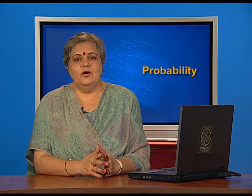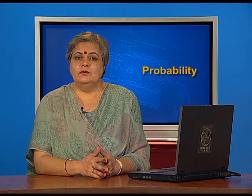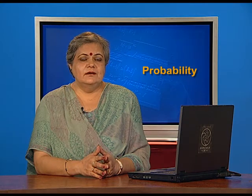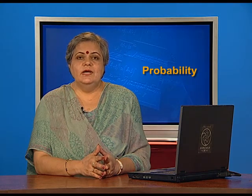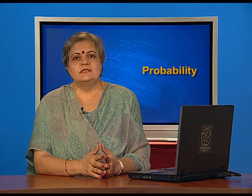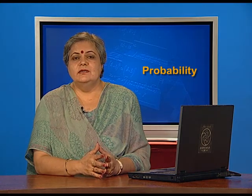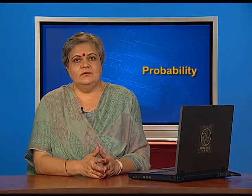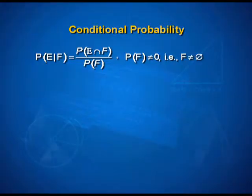What is the probability of event E happening, knowing that event F has occurred? We also looked at a relation which can be used as a formula. The result that we discussed and derived was that the probability of E given that F has occurred is the same as the probability of E intersection F divided by probability of F, where probability of F is not equal to 0 — that is, F is not an impossible event.